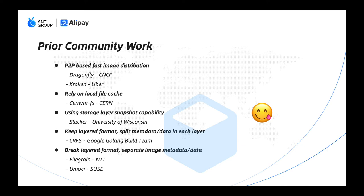Communities have also tried to resolve these issues. We are happy to see related open-source projects such as Dragonfly and Kraken's P2P image service, and StargZ from Google. It uses a local file cache. Slacker from University of Wisconsin uses storage layer snapshot compatibility. CRFS from Google's Go build team keeps the layered format, splitting metadata and data in each layer. FileGz from NTT and eStargz from SUSE break the layered format, separating image metadata and data.